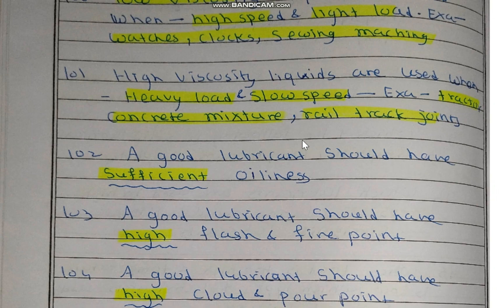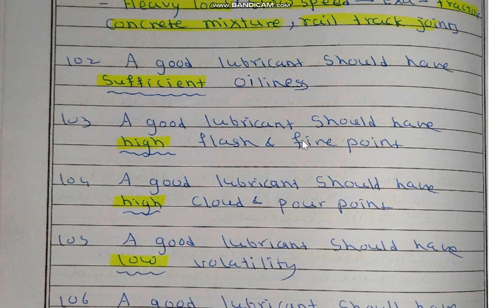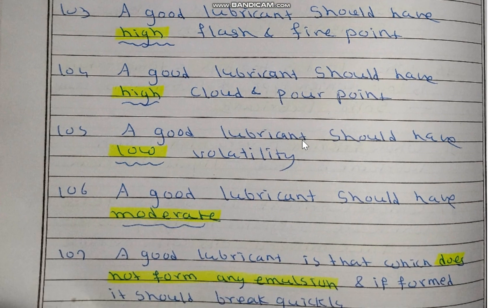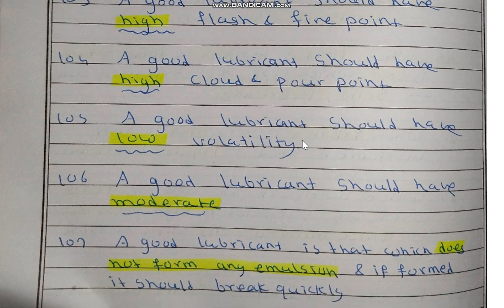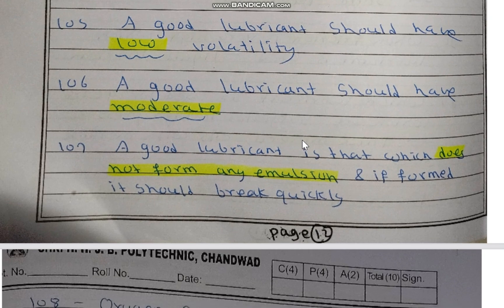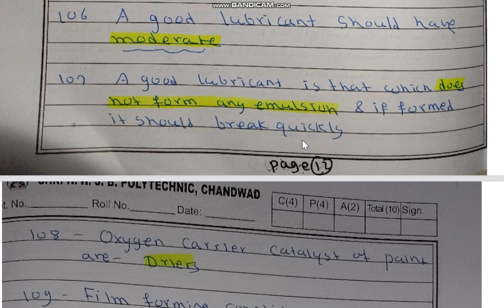High viscosity liquids are used for heavy load and slow speed applications like tractors, concrete mixers, and rail track joints — thick oils are used. A good lubricant should have sufficient oiliness, high flash point and fire point so it does not catch fire easily, high cloud and pour point, high volatility, and moderate saponification value. A good lubricant should not form any emulsion — a mixture of oil and water — or if formed, it should break easily.